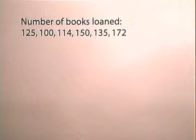Now let's find the median of this group of numbers. The number of books loaned: 125, 100, 114, 150, 135, 172. The first thing we need to do is order the numbers from smallest to largest.